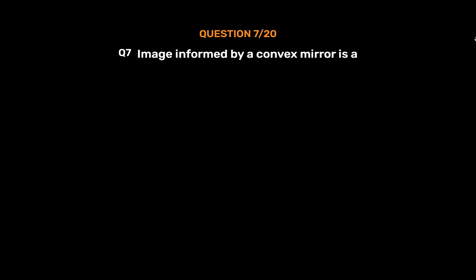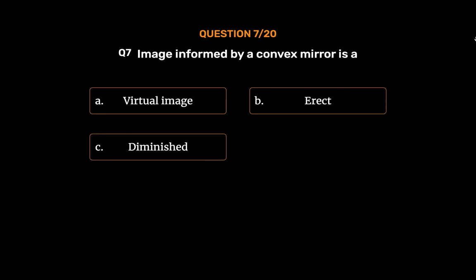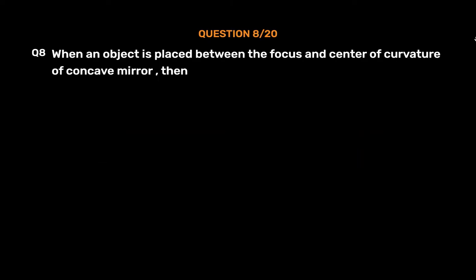Question No. 7: Image formed by a convex mirror is — Option A: Virtual image, Option B: Erect, Option C: Diminished, Option D: All of the above. The correct answer is Option D: All of the above.